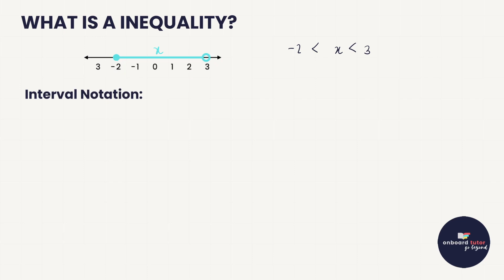We've got a closed circle, which means minus 2 may be included — so that means 'or equal to.' And then on this side we've got an open circle, which means 3 is not included. So that is essentially what an inequality is telling us: that x, or whatever value we're working with, fits between two ranges. Then we have interval notation, where you can take this exact same thing and write it in a slightly different way. You can say x is an element, and now it fits between minus 2 and 3. Minus 2 is included so that's a square bracket, and 3 is not included so that would be a round bracket.